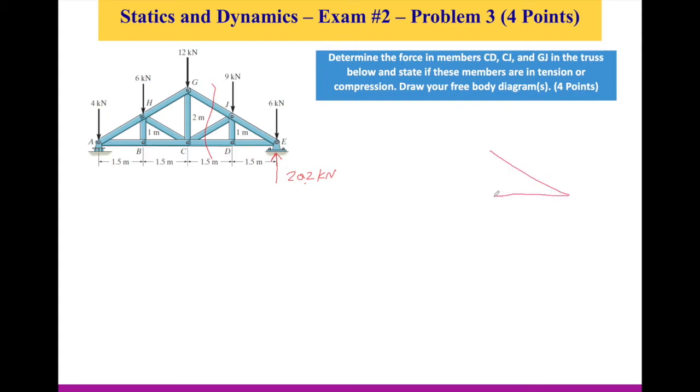We have the first triangle, and we created three forces coming out of that section from J to G. We call this FJG, and we call this force FJC. And these are member forces. And we call this force FCD.